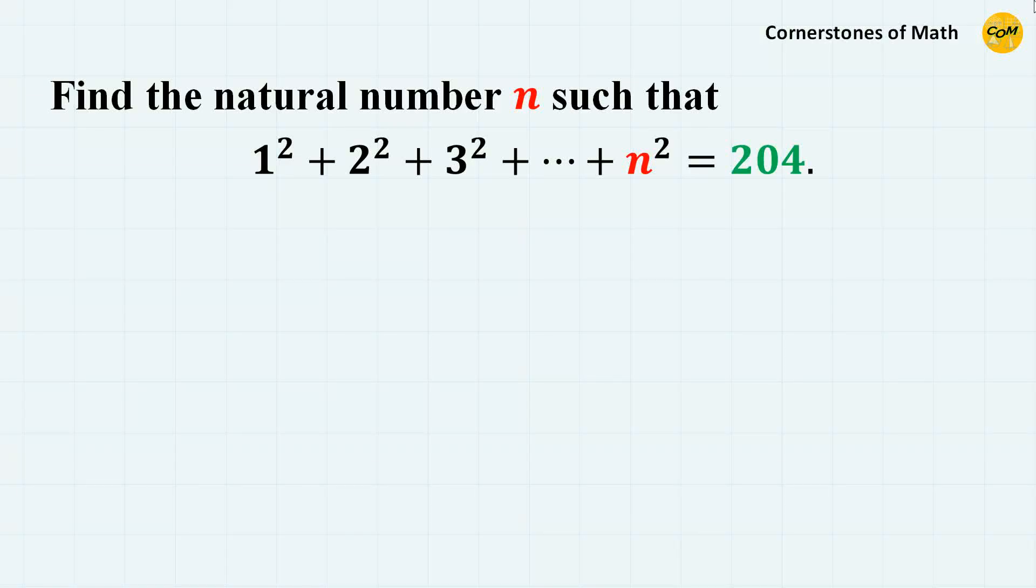Hello, and welcome to yet another video of Cornerstones of Math. The sum of squares of consecutive natural numbers from 1 squared to n squared gives 204. What is the value of the natural number n?